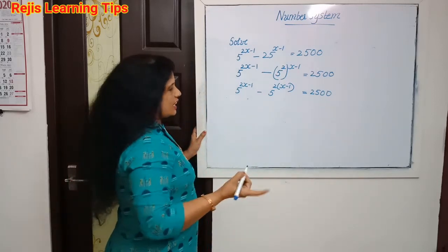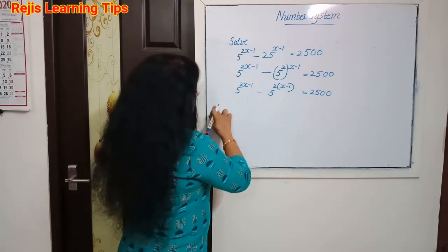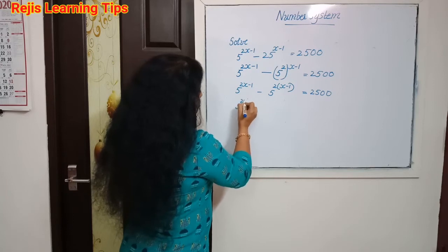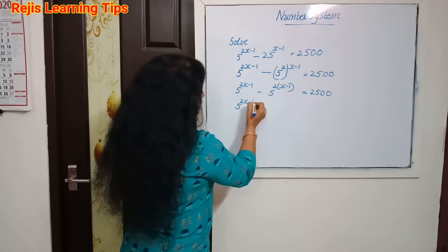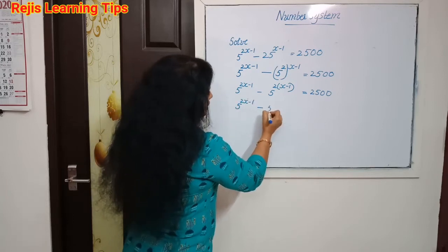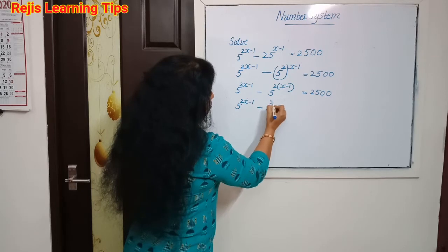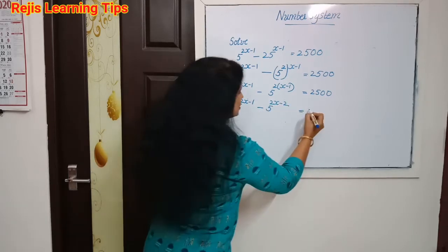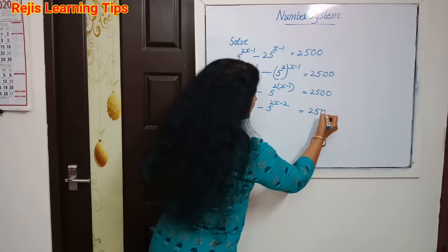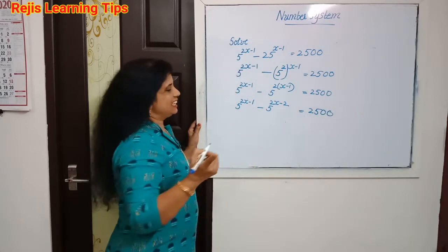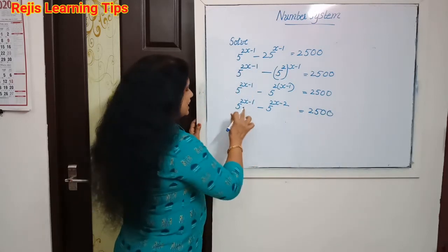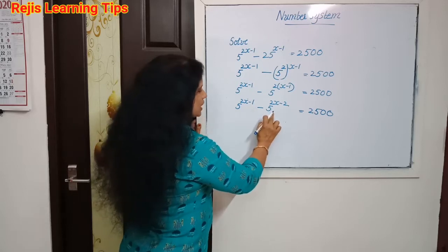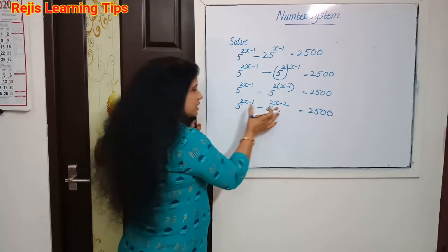Then 5 raise to 2x minus 1, minus 5 raise to 2x minus 2, that is equal to 2500.